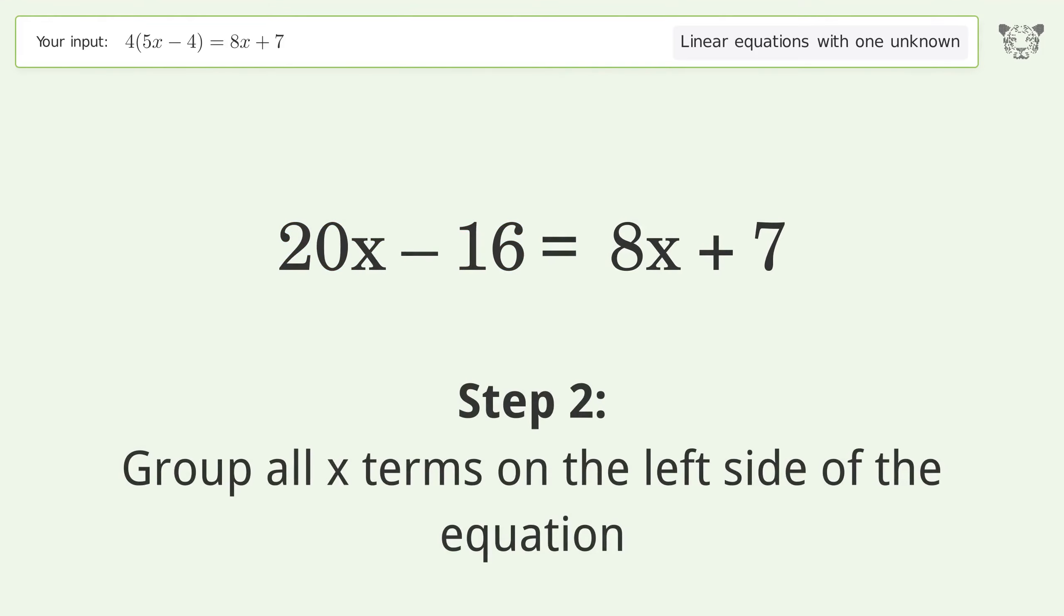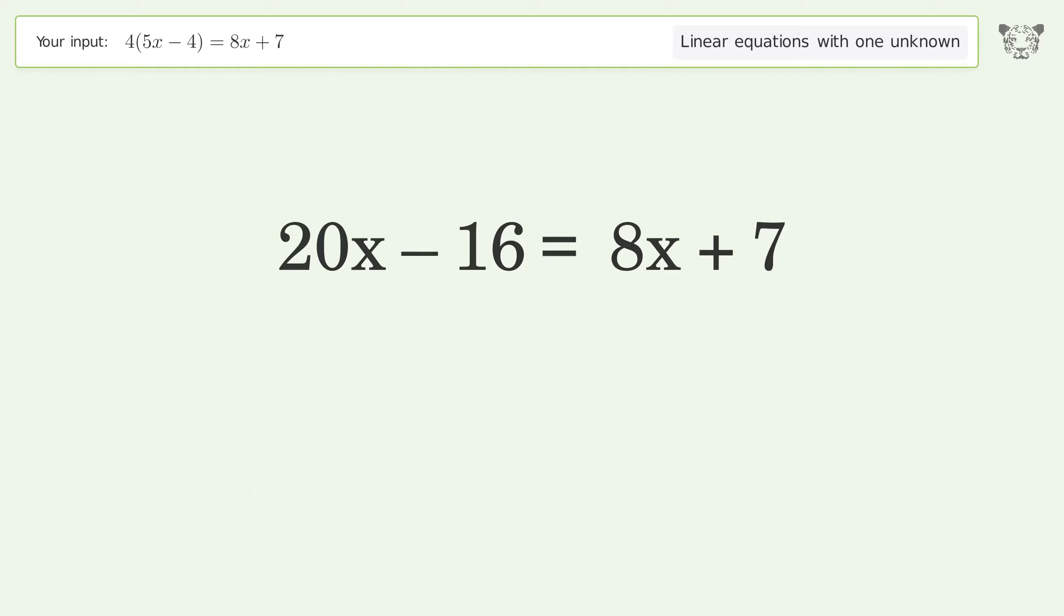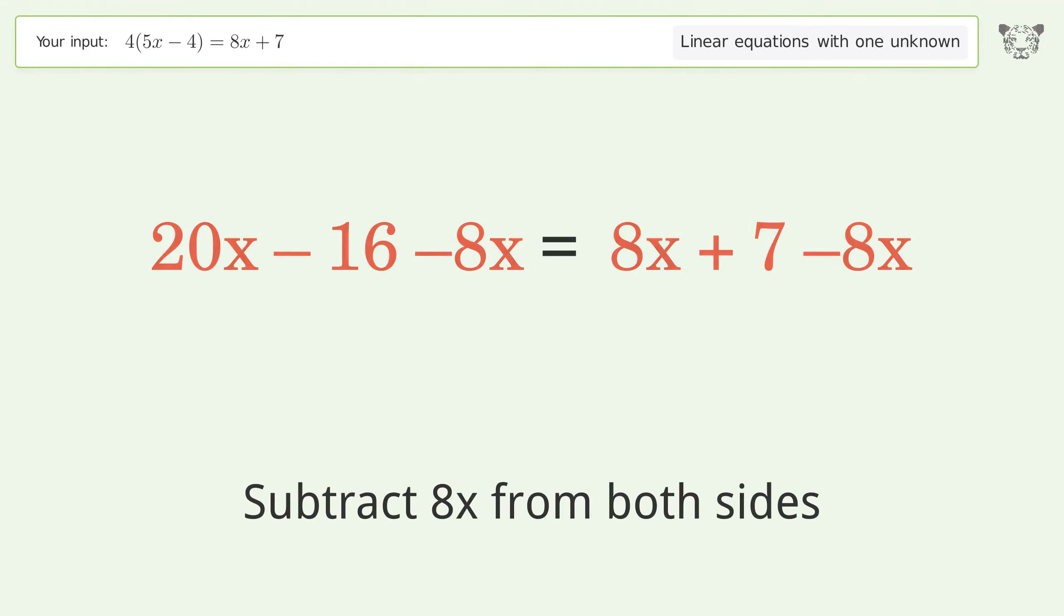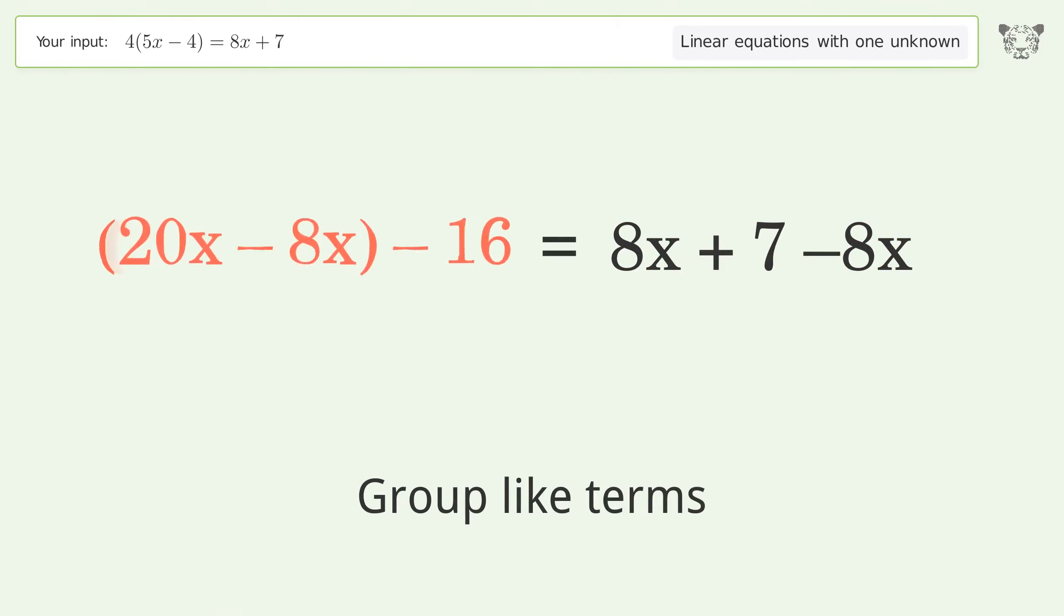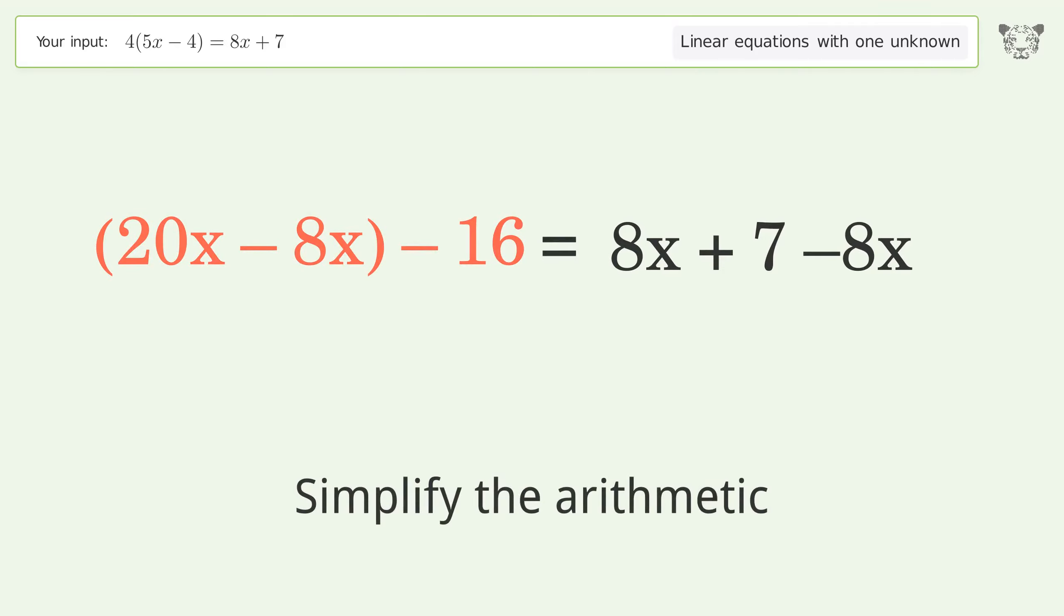Group all x terms on the left side of the equation. Subtract 8x from both sides, group like terms, and simplify the arithmetic.